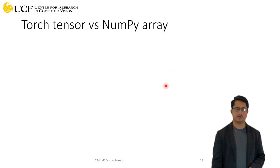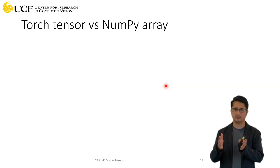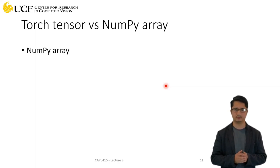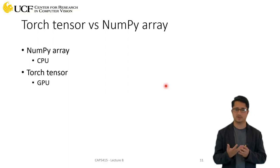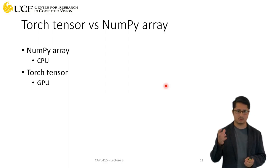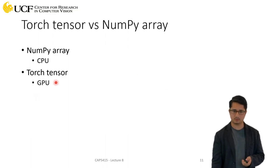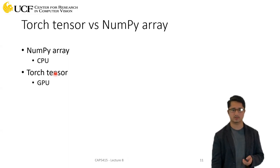Now let's compare PyTorch tensors versus NumPy arrays. Whatever you can do with NumPy arrays, you can largely do with PyTorch tensors. The biggest difference is that NumPy array computations happen on the CPU, whereas tensors allow you to perform those computations — multiplication, addition — on the GPU, which is much more efficient. Tensors can also be used on CPU, but in addition they support GPU computation.